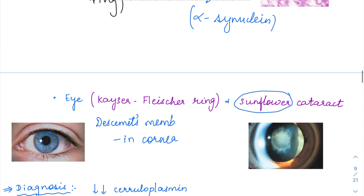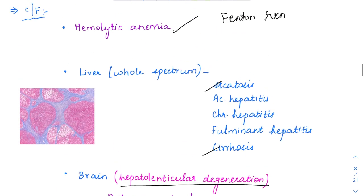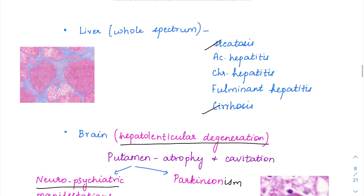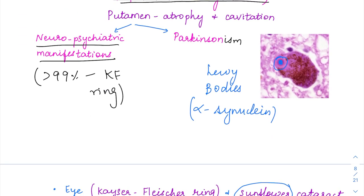In the history, if they describe a person of 20 to 40 years of age with liver disease, along with neuropsychiatric manifestations or Parkinsonism features and hemolytic anemia, they're probably pointing to Wilson's disease, wherein copper is increased and ceruloplasmin is decreased.